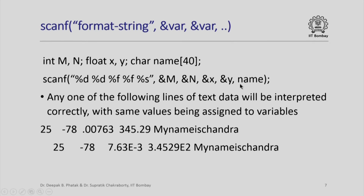Why have we not used &name? Well, name is actually a character string of 40 characters in an array, and the name of the array itself is a pointer, so we need not say &name. If I give input in any one of these lines, it will correctly associate the same value to the variable — for example: 25, minus 78, 0.00763, 345, 0.29, and the string "Chandran". Notice that cin would have accomplished the same thing, but scanf does it as per our format specifier. The same format specification will work even if we give data in a different arrangement, but there is a special feature of scanf which permits us to do things we cannot do using cin.